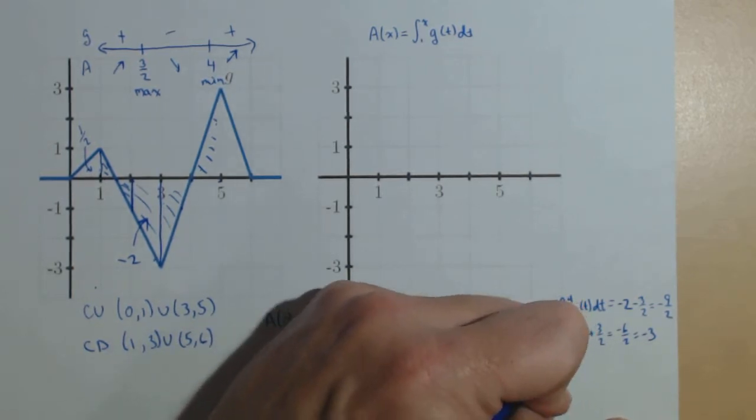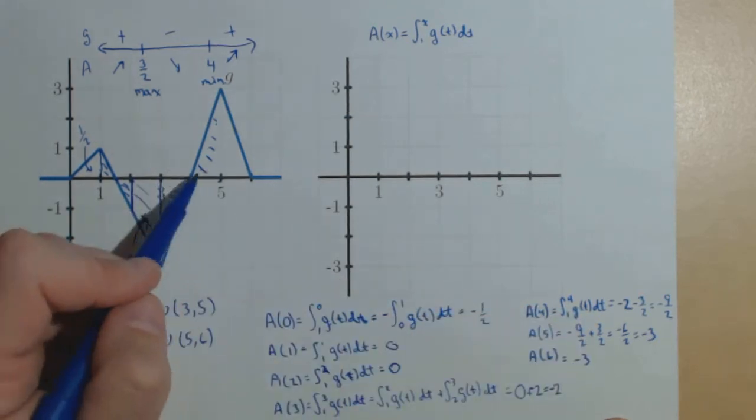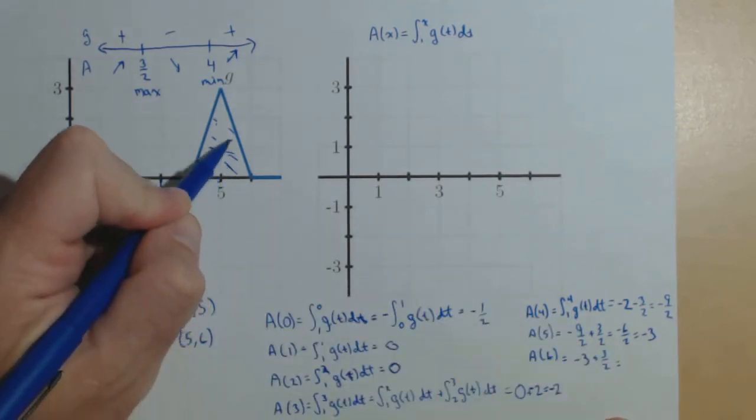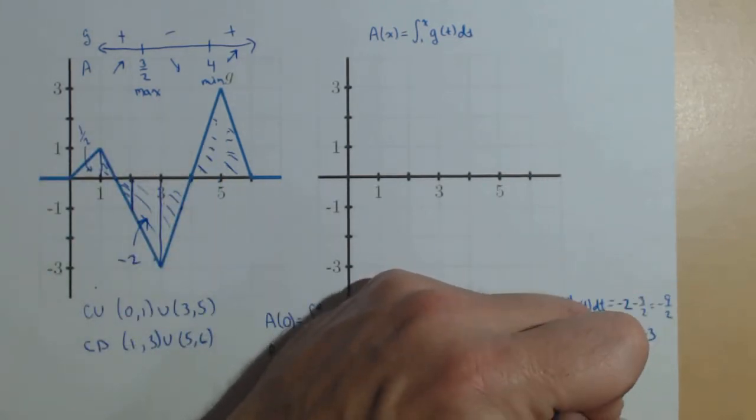A of 6 is going to be that negative 3 that we already had plus this extra accumulation. We have another positive 3 halves, since it's above the x-axis, and so we're going to get a negative 3 halves.